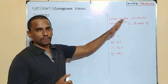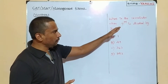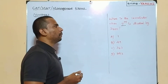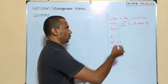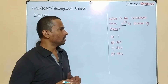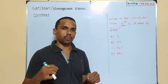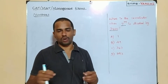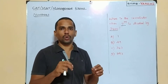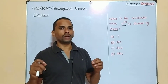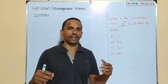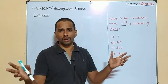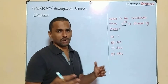Let's see the question: what is the remainder when 7 power 99 is divided by 2400? This is going to be the question. Actually, this question is going to be very easy, provided you know the basic properties of remainders and also the nature of powers. If you have that idea, then this problem is nothing at all.